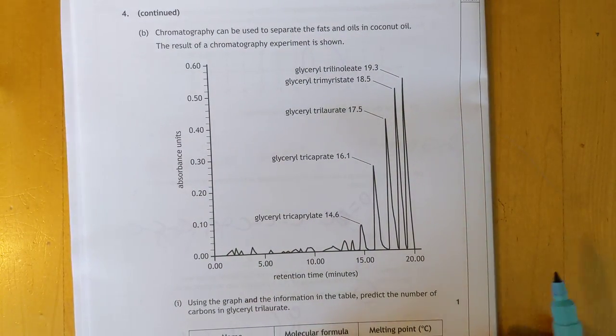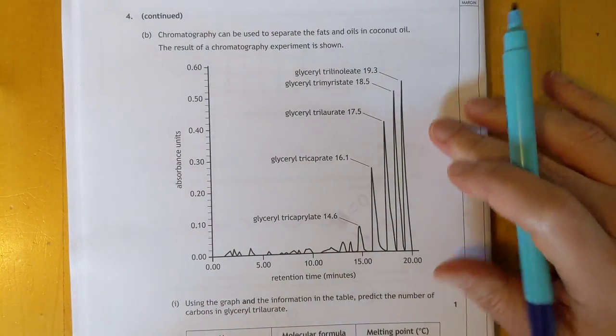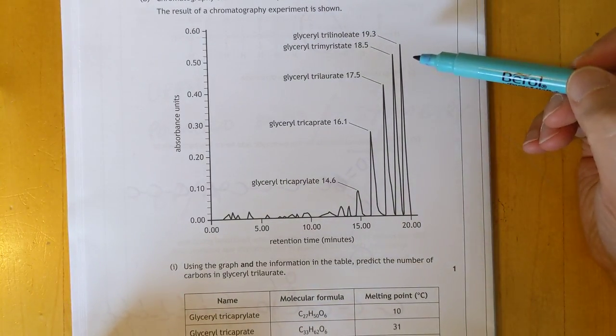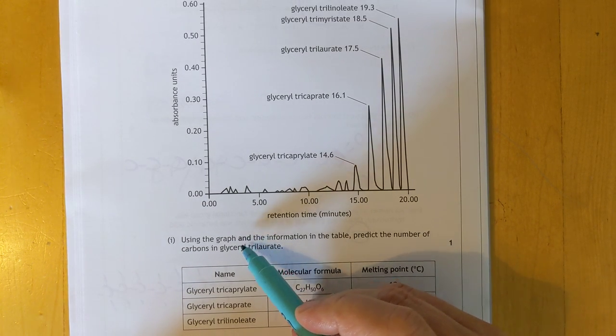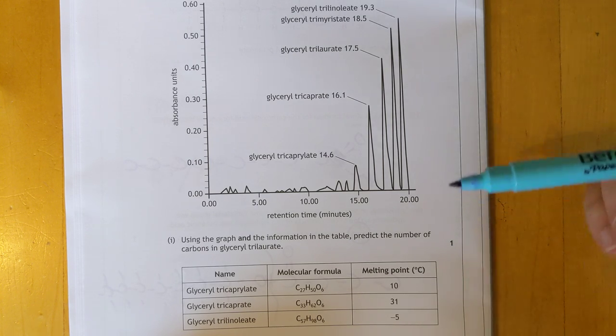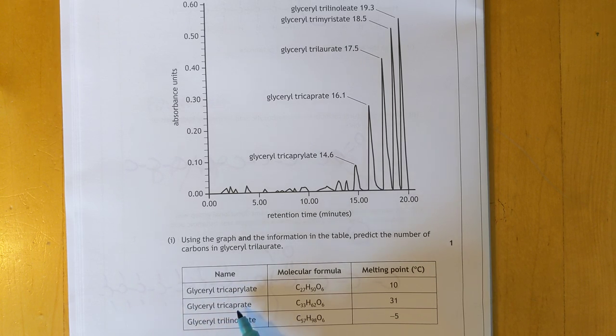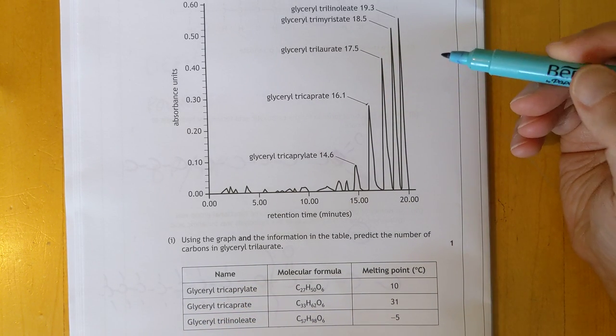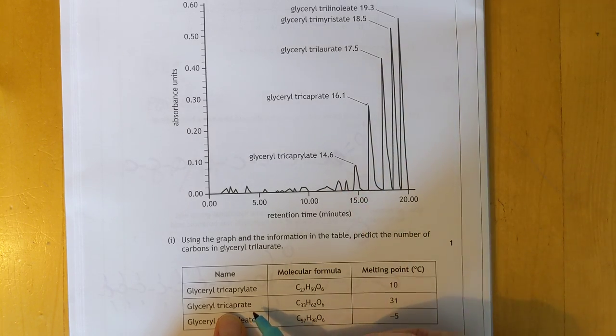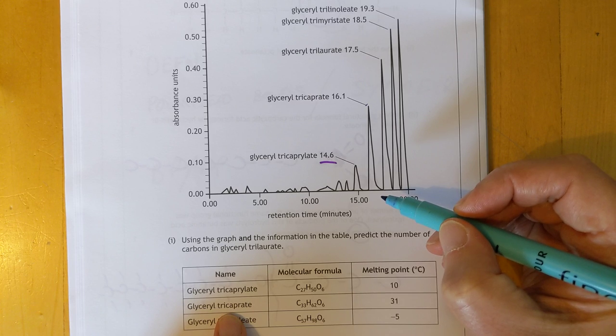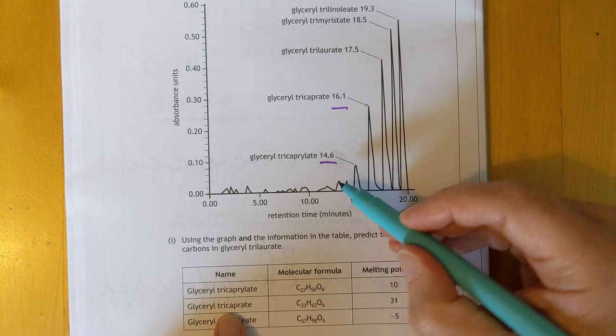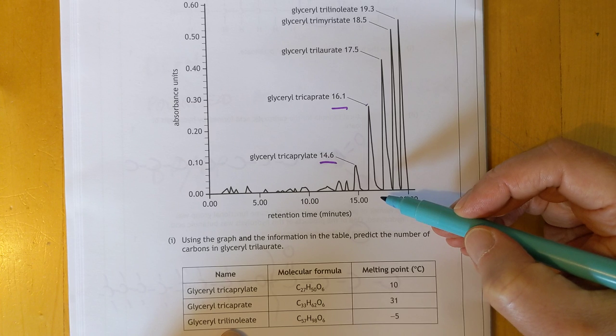A scary chromatogram time. What's going on here? Chromatography. We've got absorbance and we've got retention time. This is a form of gas chromatography. I did a video about this. Use the graph and the information on the table in bold. Predict the number of carbons in glycerol trilaurate. Glycerol tricaproate is there. Glycerol tricaprate. Pick words that are very similar to each other. That's helping everybody, isn't it?